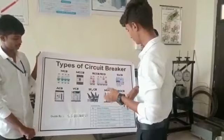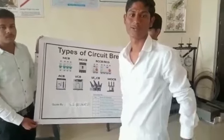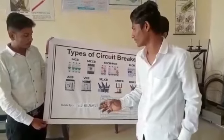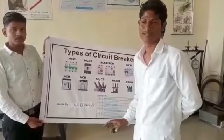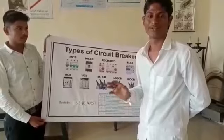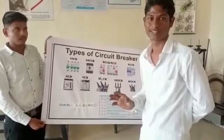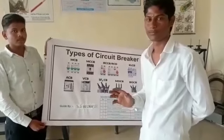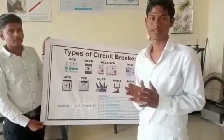The group number is 6. Hello friends, my name is Salaz Sonane. My project name is Types of Circuit Breakers. We have explained today the VCB, vacuum circuit breaker. It is used in industrial or large-scale applications. We use the vacuum circuit breaker in the industry.